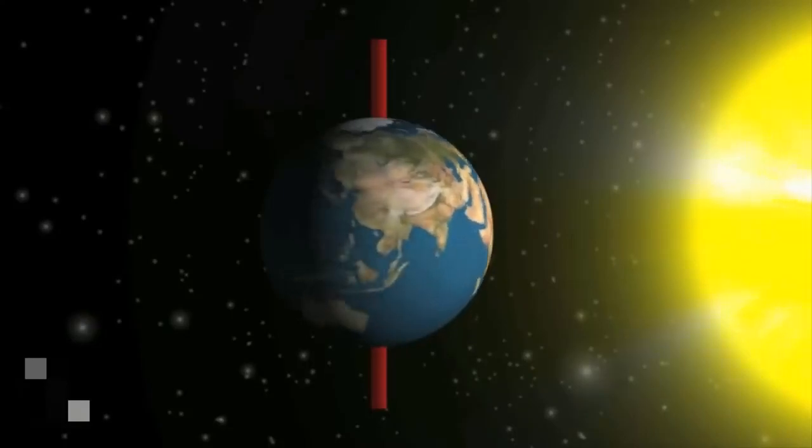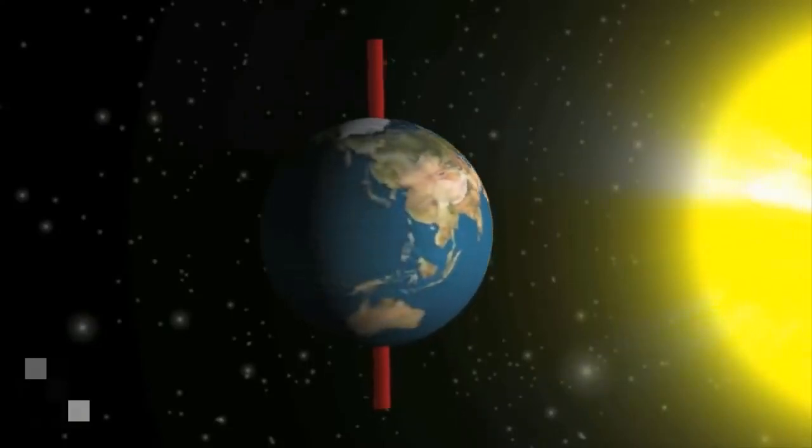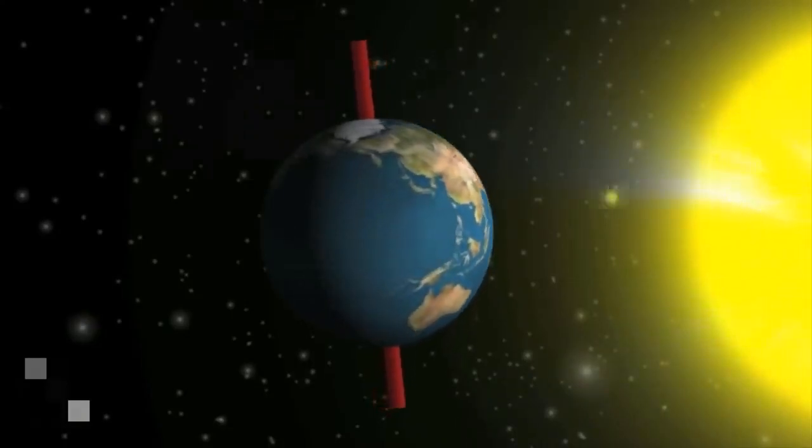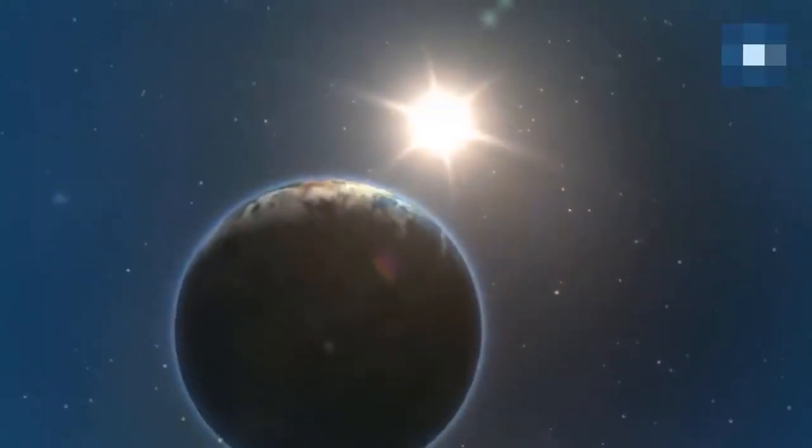At the same time that the Earth spins on its axis, it also orbits or revolves around the Sun. This movement is called revolution.